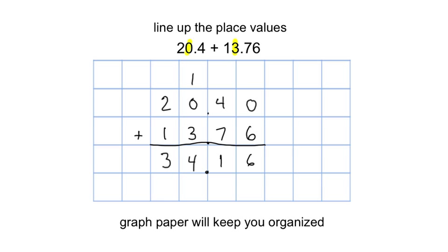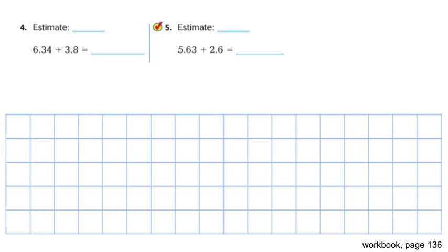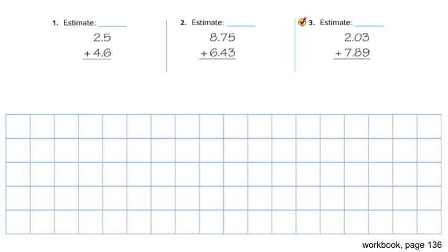All right, let's get our book pages out so we can do a little book learning. So problem number 1 is we're going to make an estimate first, and then we're going to add those. So our estimate, 2.5 is close to 3. 4.6 is close to 5. And so our estimate would be 5 plus 3 is 8. So our estimate's going to be somewhere around 8.